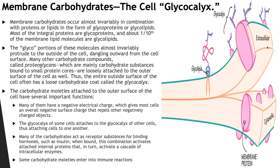The glycocalyx has several important functions. Many of its components have a negative electrical charge, which helps increase the selectivity of the plasma membrane. The glycocalyx also helps cells attach to the glycocalyx of other cells, allowing for intercellular communication. In addition, the carbohydrates act as receptor substances for binding hormones.